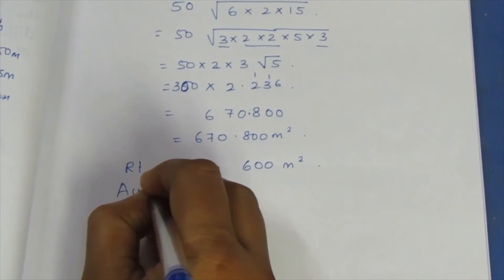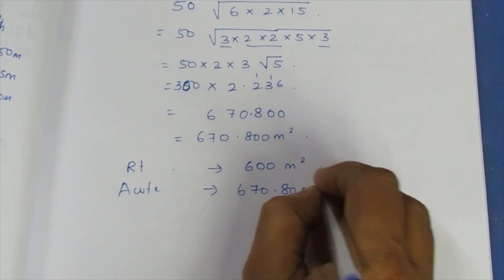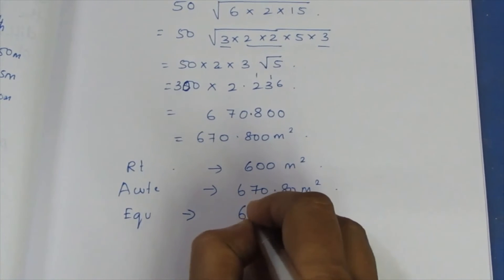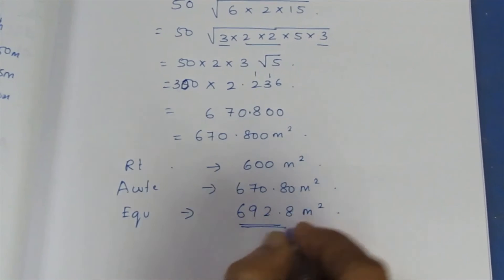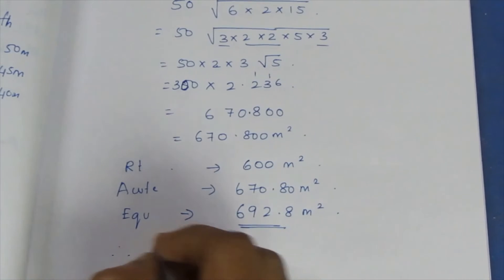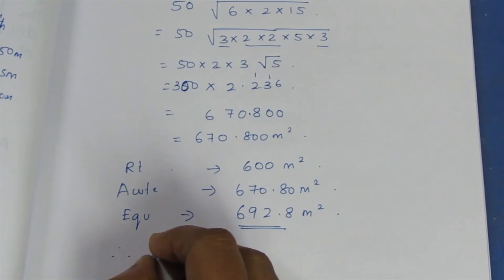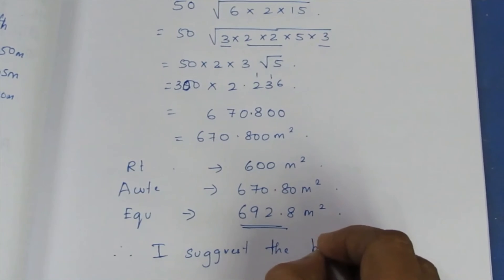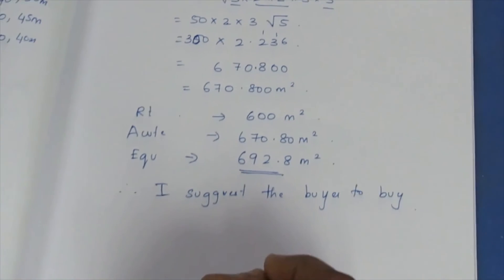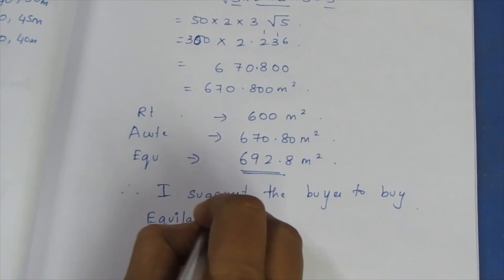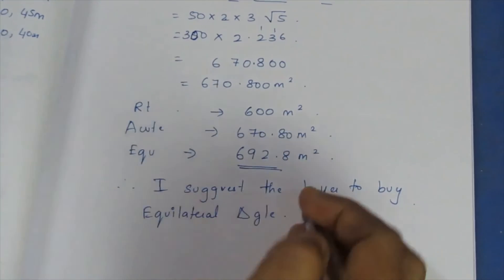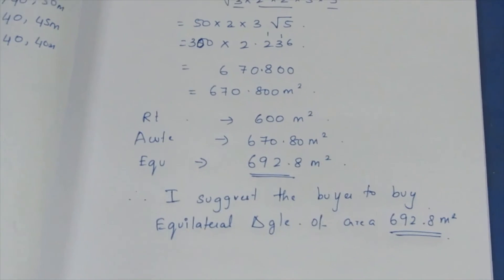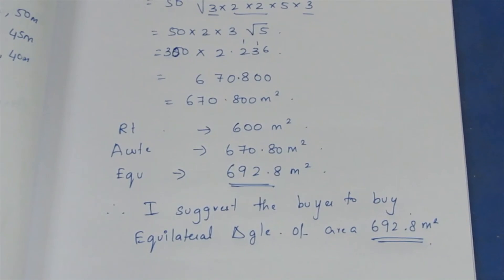Comparing the three areas: right triangle = 600 m², acute triangle ≈ 670.8 m², equilateral triangle ≈ 692.8 m². The equilateral triangle has the largest area. Therefore, I suggest the buyer to buy the equilateral triangle plot, with an area of 692.8 m².